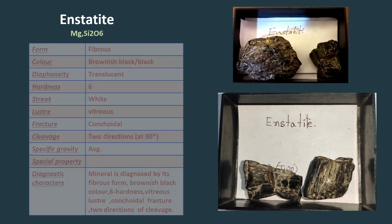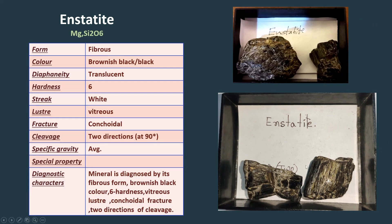First, enstatite. In the right side picture you can see the enstatite mineral, which can be diagnosed by its fibrous form, brownish black or black color, translucent diaphaneity, six hardness, white streak, vitreous lustre, conchoidal fracture, and two-directional cleavage with an angle at 90 degrees.